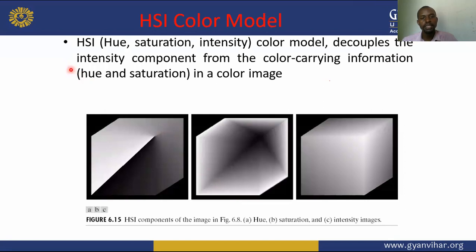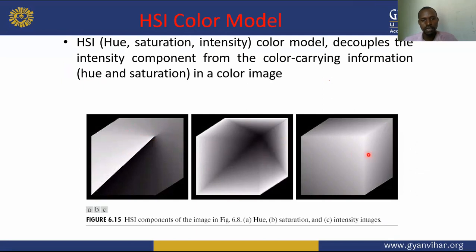For the HSI colour model, hue, saturation, and intensity each carry different colour information in an image. These three components — hue, saturation, and intensity — are the basis of this model.